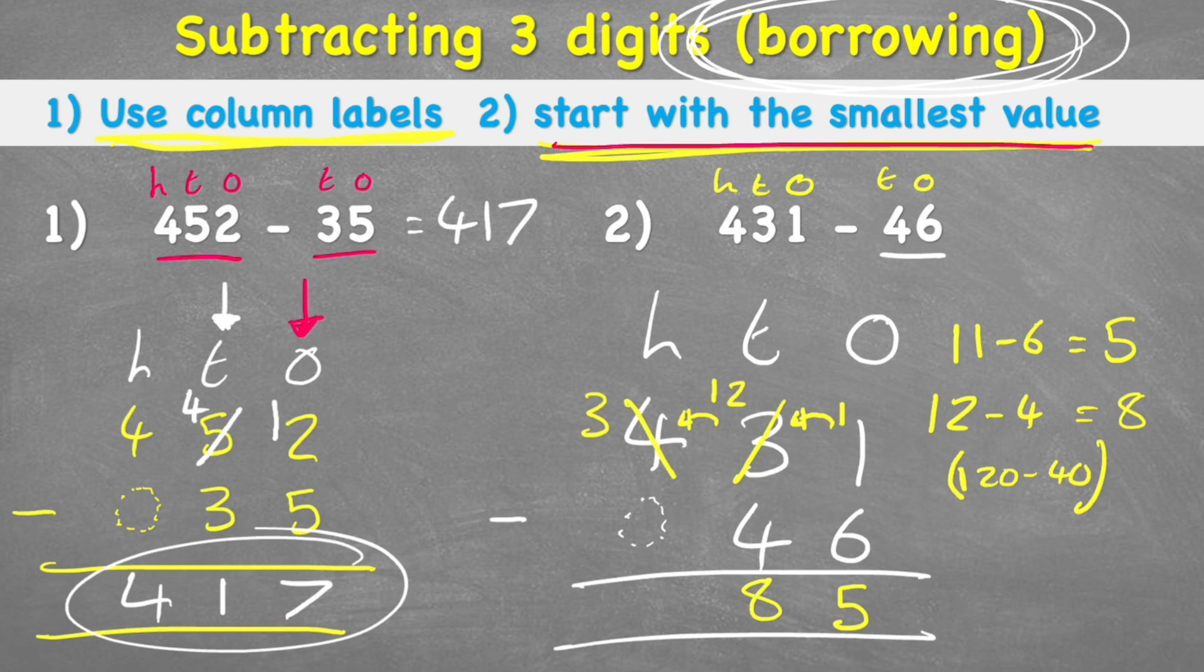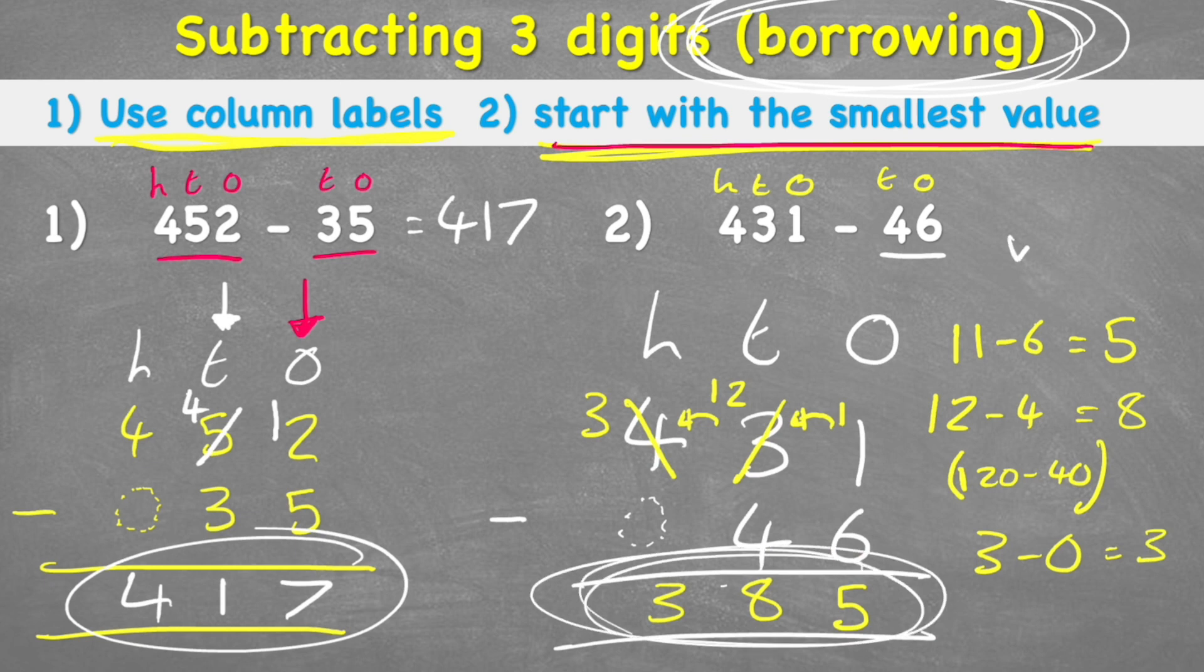So I can put an 8 as the answer in my 10s column. My 100s column says 3, subtract 0, nice and easy, that's going to equal 3. So the answer to 431 subtract 46 is 385. Awesome.